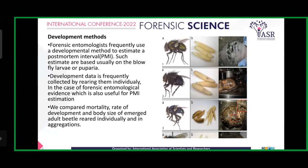Such estimations are based usually on blowfly larvae or pupae. Development data is frequently collected by rearing them, which is also useful for PMI estimation. Entomological evidence is collected based on insect clues used in a criminal investigation. If evidence is not carefully preserved at a crime scene after a death, it may be difficult or impossible for an entomologist to make an accurate identification of a specimen, if for example all morphological characters are not preserved.